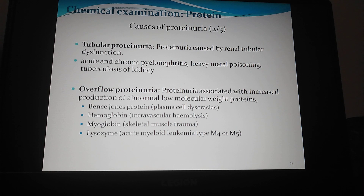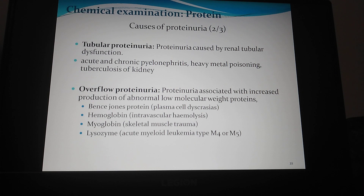Overflow proteinuria. When concentration of a low molecular weight protein rises in plasma, it overflows from plasma into the urine. Causes of overflow proteinuria are Bence-Jones protein in cases of plasma cell dyscrasia, hemoglobin in cases of intravascular hemolysis, myoglobin in cases of skeletal muscle trauma, and lysozyme in cases of acute myeloid leukemia type M4 and M5 variant.